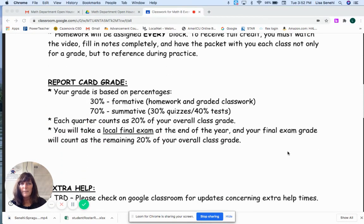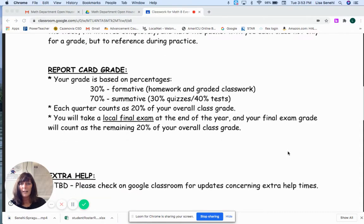Report card grade: 30% formative, combination of homework and some of our graded classwork activities; 70% summative, so tests and quizzes. Each quarter is 20% along with 20% for a final exam at the end of the year.